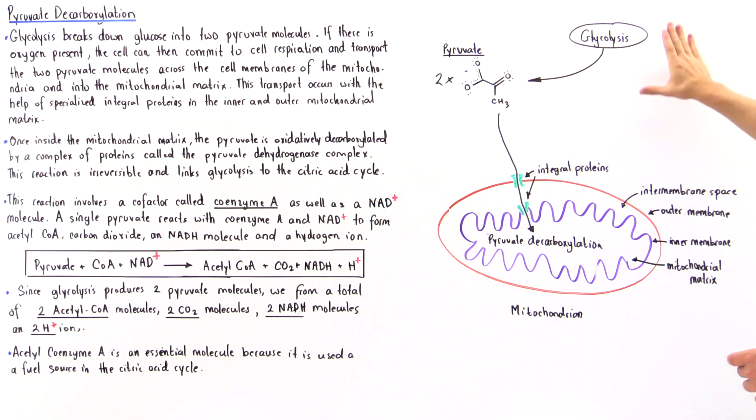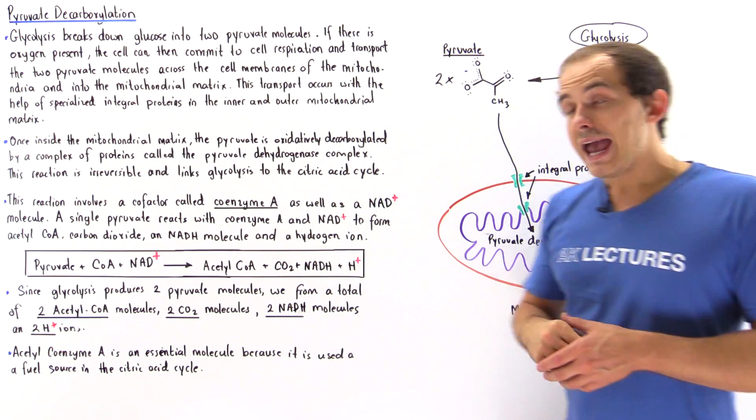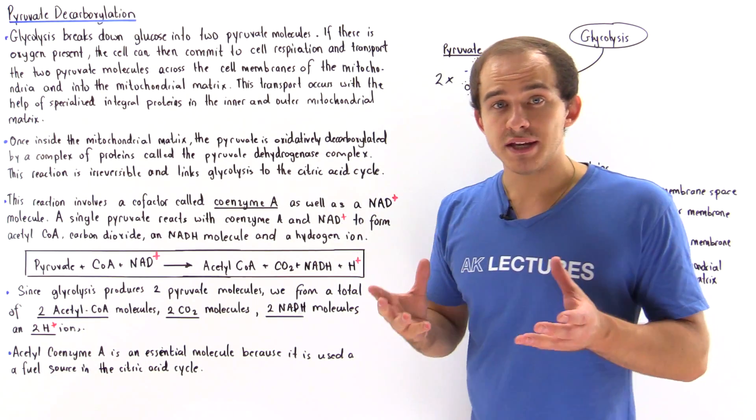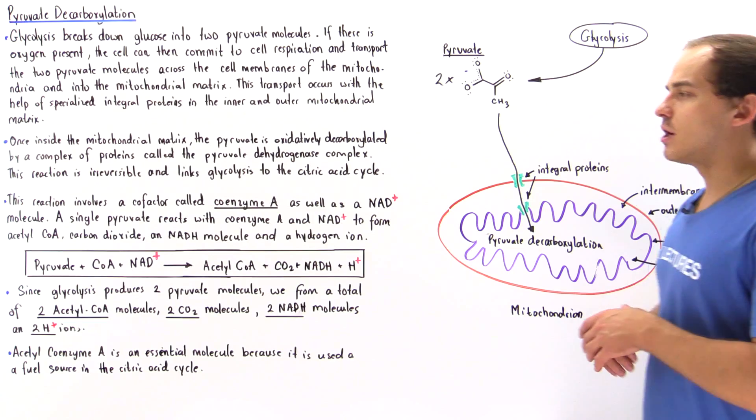Glycolysis takes place in the cytosol of the cell, in the fluid portion of the cytoplasm, and is an anaerobic process, which means it takes place in the presence or absence of oxygen.